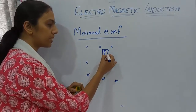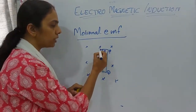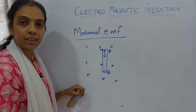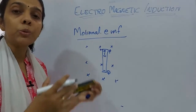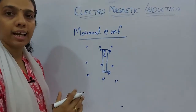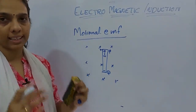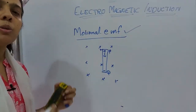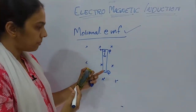Suppose the electron is moving from P to Q. When electrons move from P to Q, the upper part of the conductor will have a positive charge and the lower part will have a negative charge. Due to the movement of charges, an EMF will be induced in the conductor — because the magnetic field is present and charges are moving inside the moving conductor.